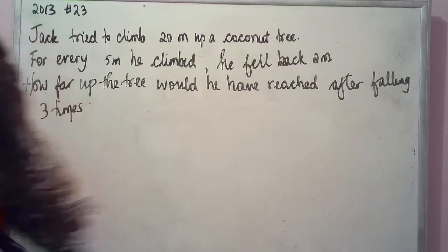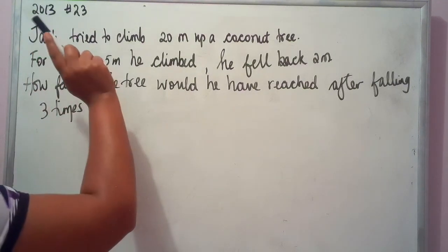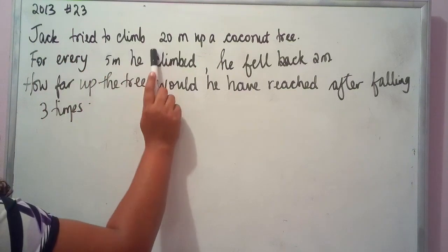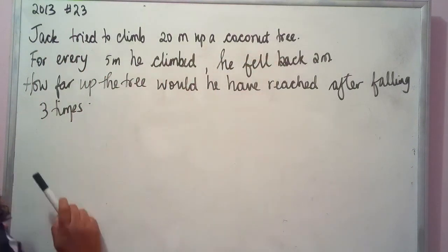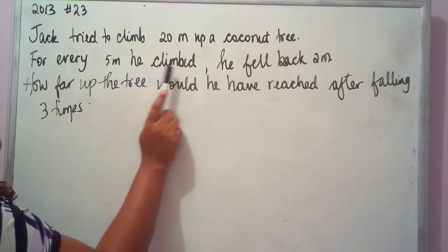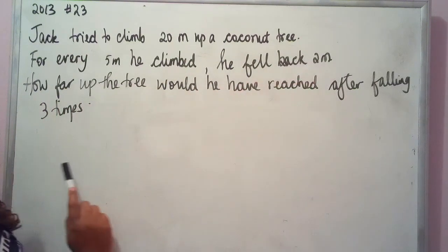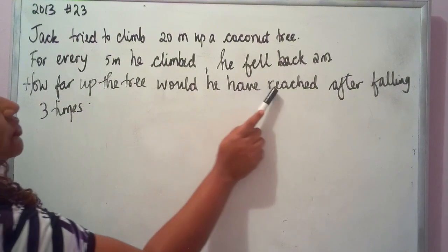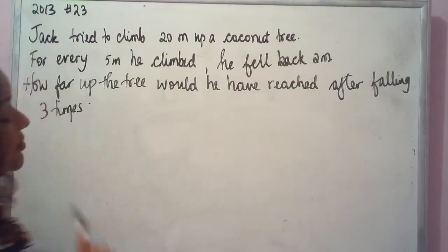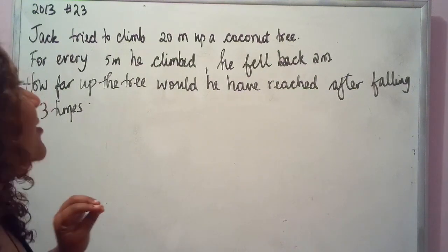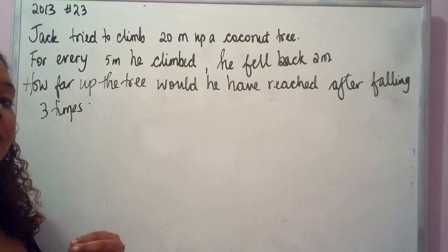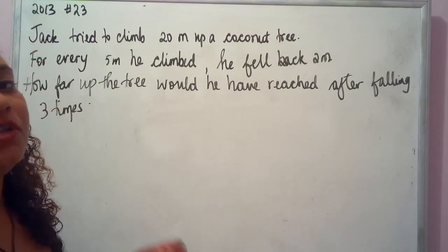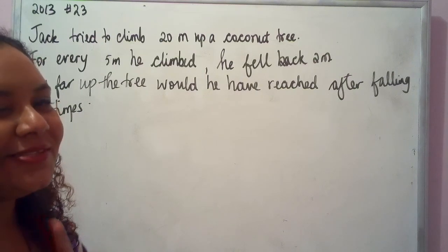Next: 2013 past paper, question 23. Jack tried to climb 20 meters up a coconut tree. For every 5 meters he climbed, he fell back 2 meters. How far up the tree would he have reached after falling three times?